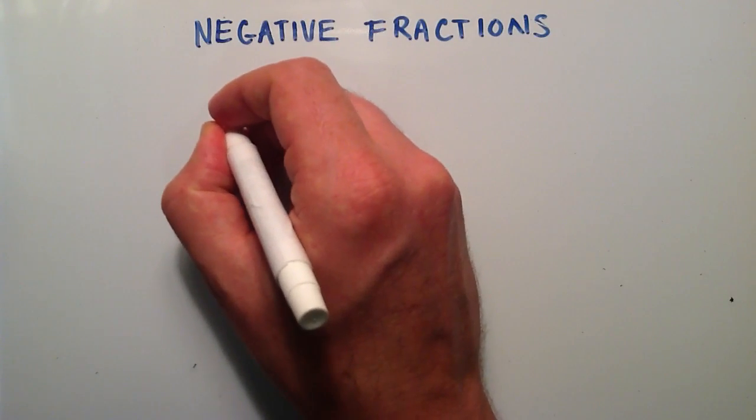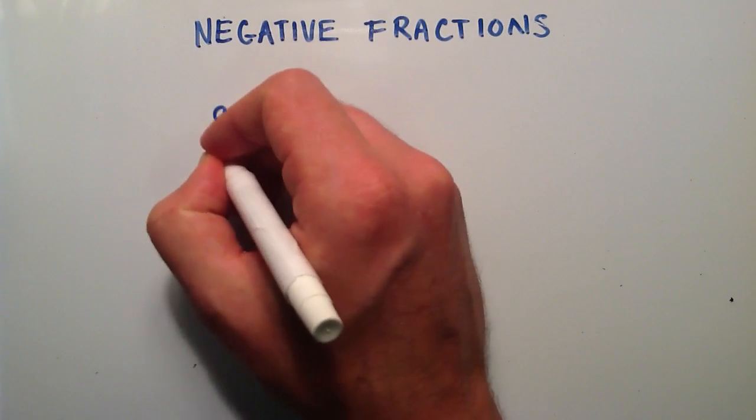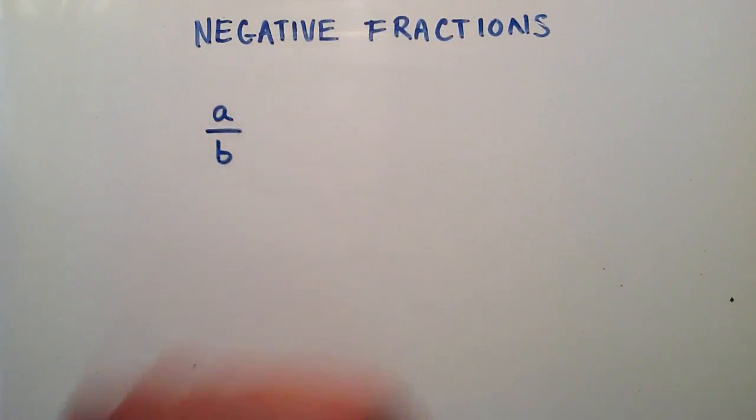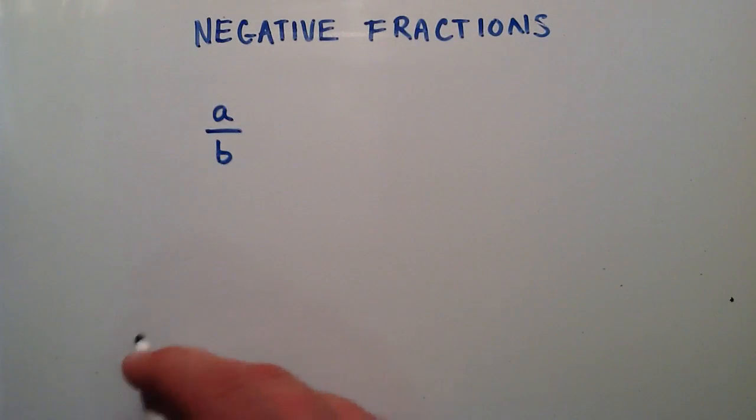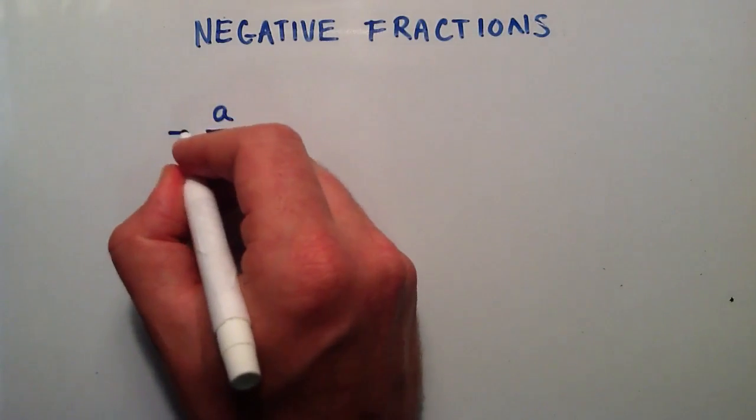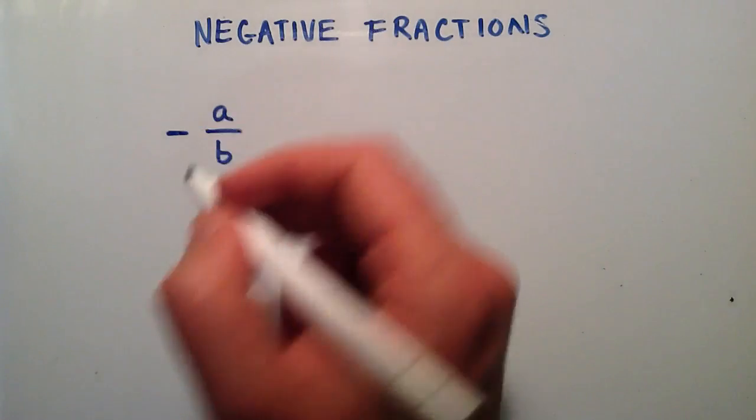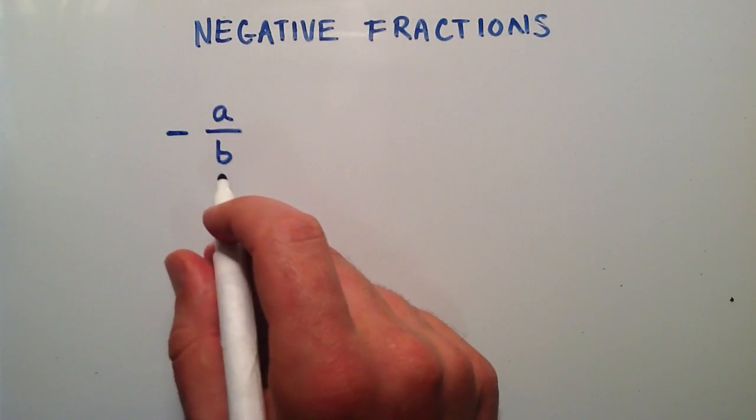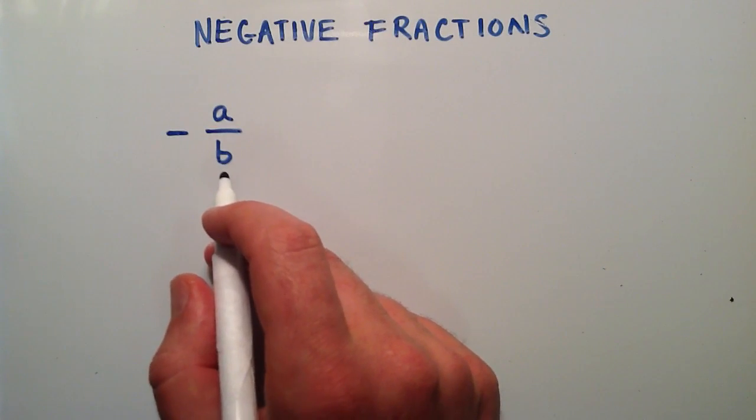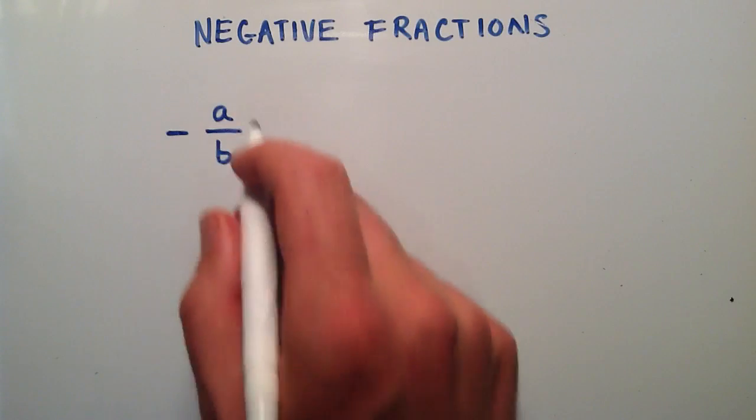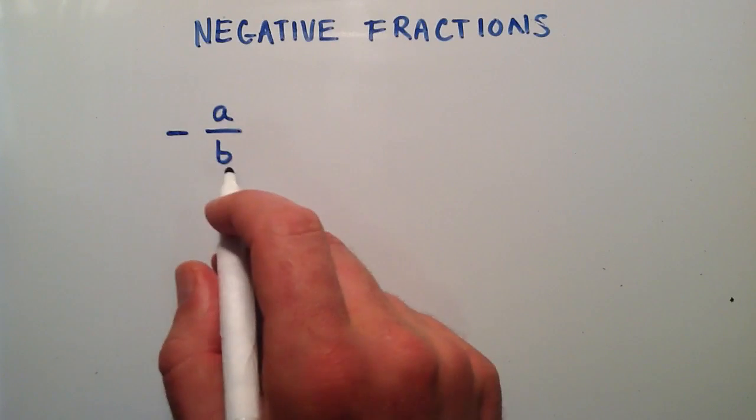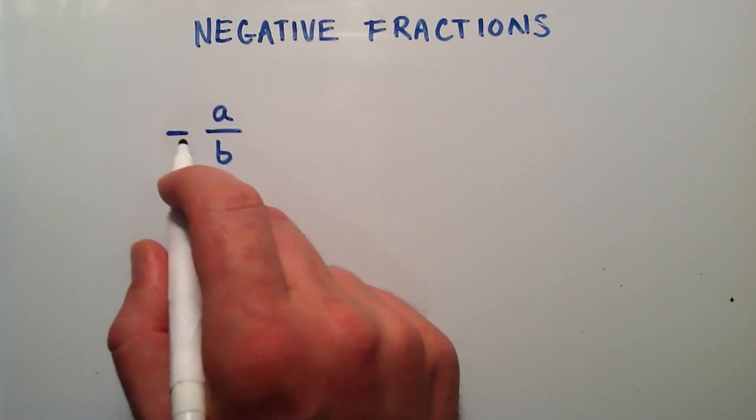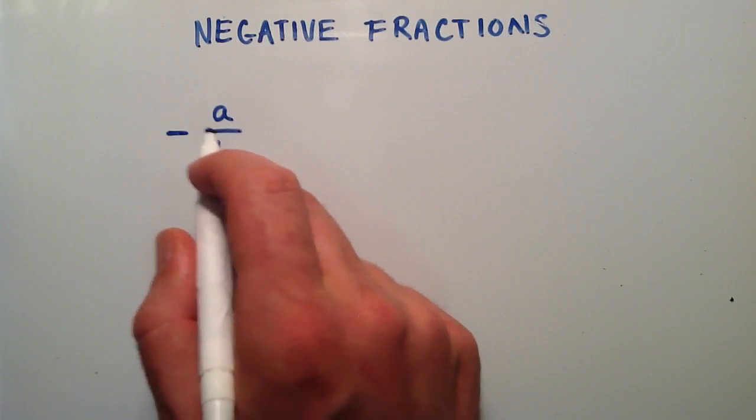So a negative fraction, let's say that a is a number and b is a number. So a divided by b is a fraction. And if this fraction is negative, we can simply say that there's a negative out front here, so I've made it negative. The trick that I want to show you is you can write this in three different ways. This is the first way you can write this. This way implies that the fraction a divided by b is negative.